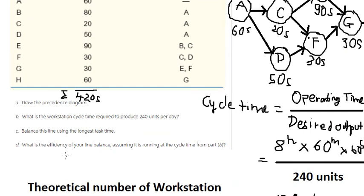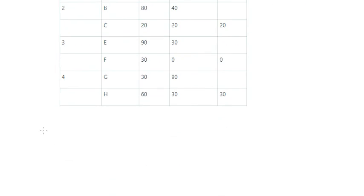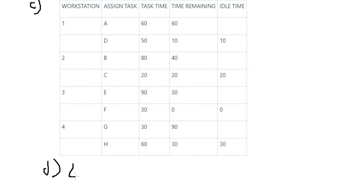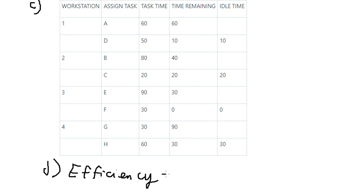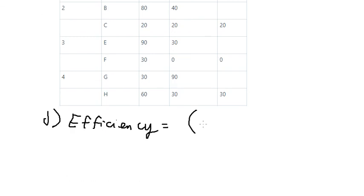And the last one is about efficiency. That is about 1 minus the total of idle time divided by the number of workstations.